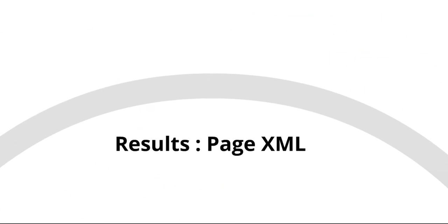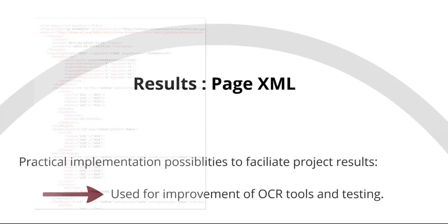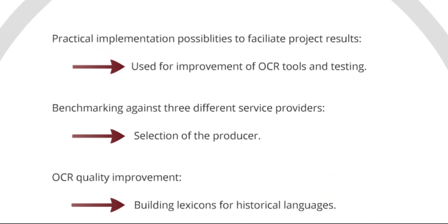What is the result of the GT production? We get the page.xml file. Page.xml can further be used in OCR tool testing and improvement. With the GT examples, we can test the work of different service providers and decide for the most suitable option. The GT examples can also be used in the building of new advanced databases, like historical language lexicons.